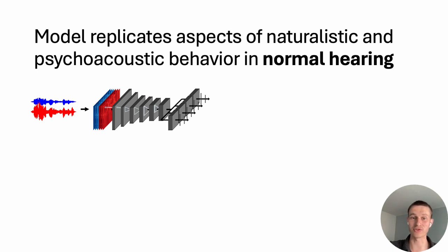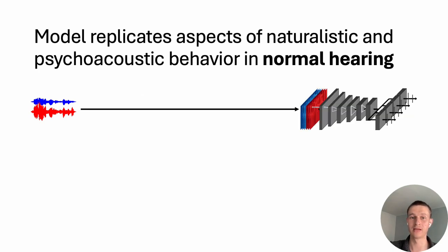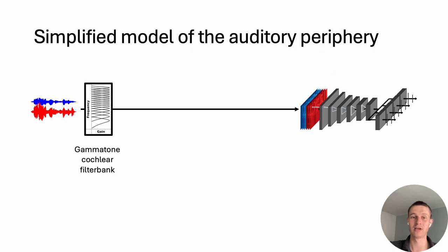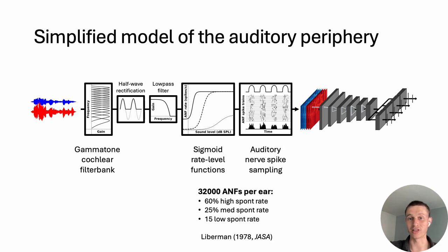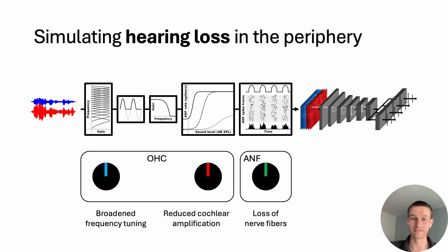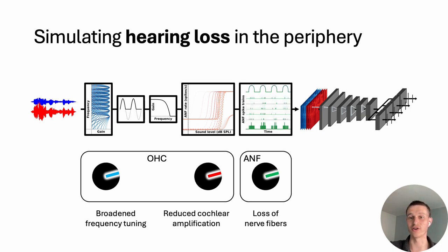So we've seen that the model replicates some aspects of both naturalistic and psychoacoustic behavior in normal hearing. To model hearing loss, we'll take a look at our network's ears. We used a simple model of the auditory periphery, consisting of a gammatone filter bank, followed by rectification and low-pass filtering, and sigmoid rate-level functions to map outputs to auditory nerve firing rates, in which we sample spike trains, modeling 32,000 spiking auditory nerve fibers per ear. Though it's a fairly crude model of the auditory nerve, we can still simulate some of the well-known peripheral effects of hearing loss by essentially turning three knobs.